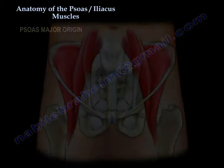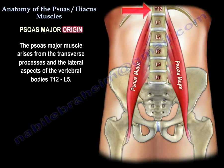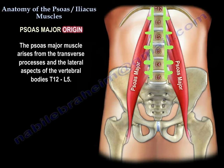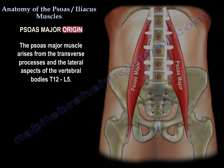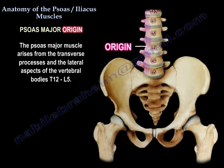The psoas major muscle arises from the transverse processes and the lateral aspects of the vertebral bodies of T12 to L1.